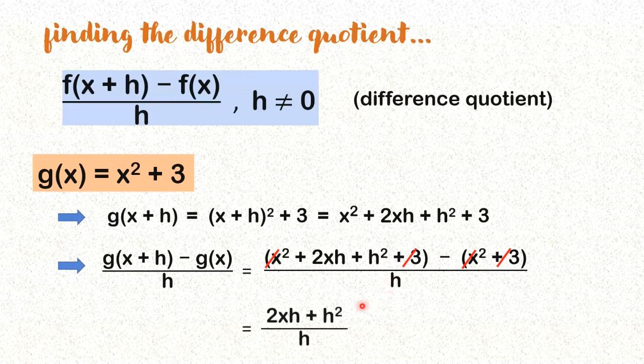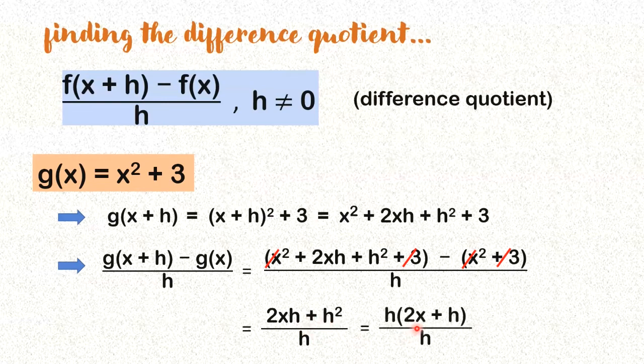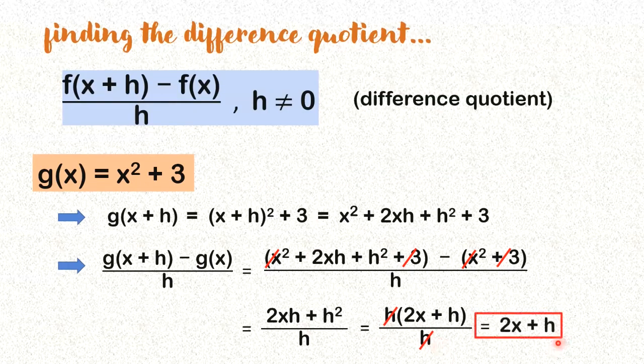But this is not yet the final answer. If you check, we can still factor out h from the numerator, right? Doing that, we're going to have this. Then the h in the numerator and denominator cancel out. So the answer here is 2x plus h. This is the difference quotient if the given function is g(x) equals x squared plus 3.